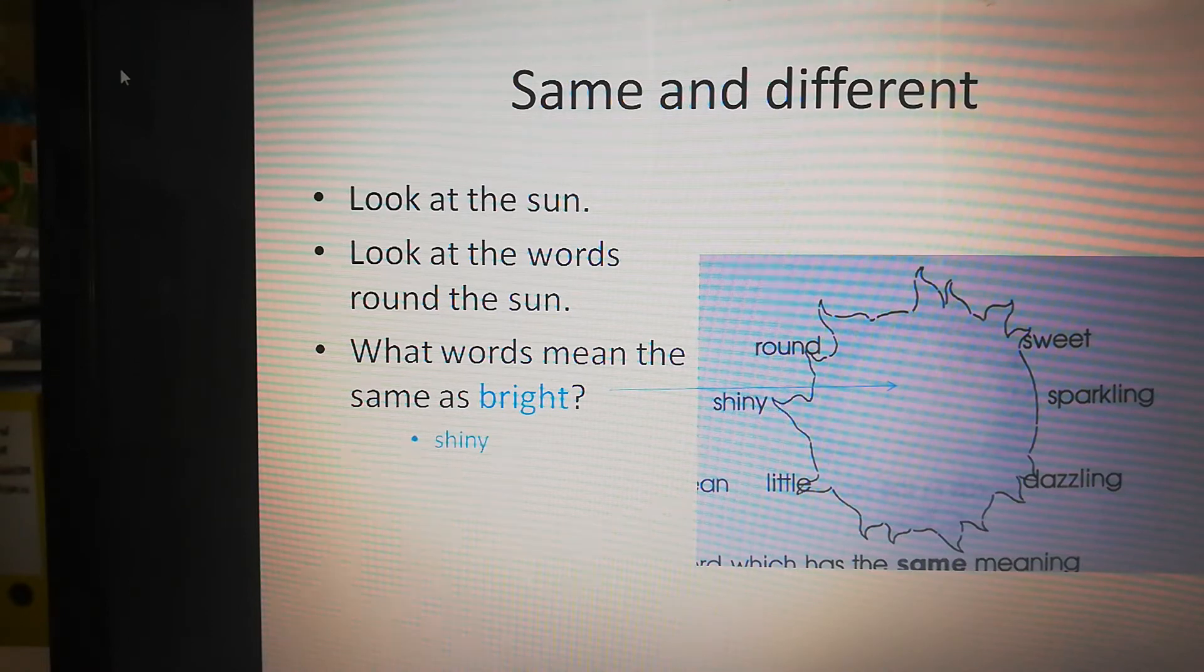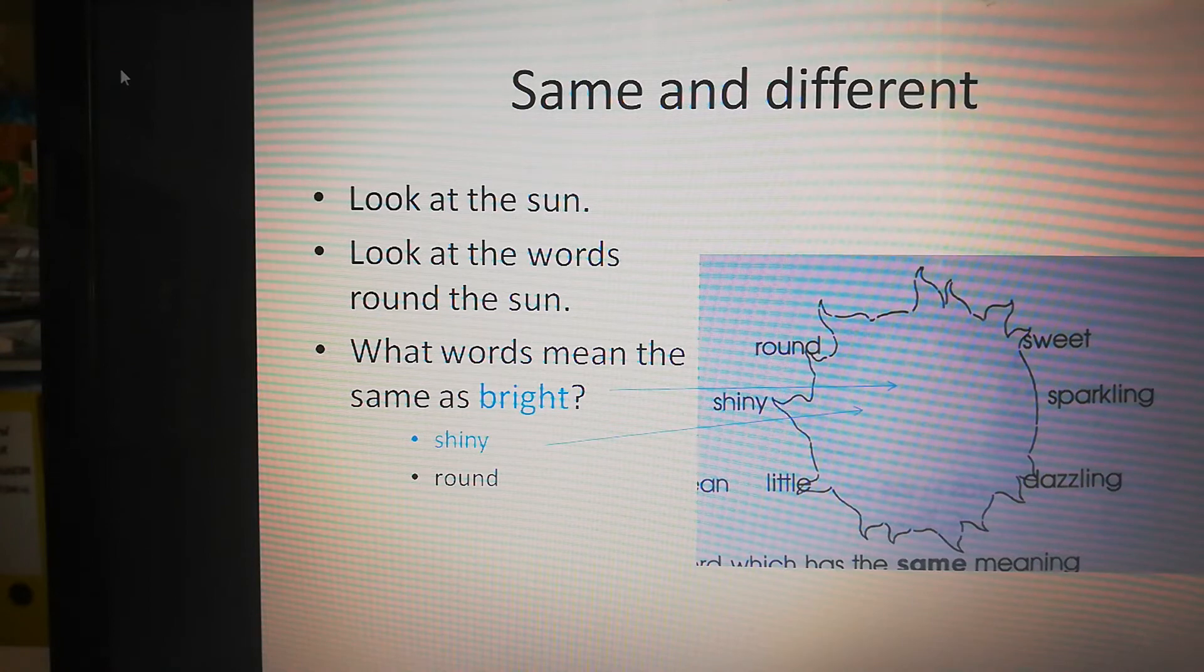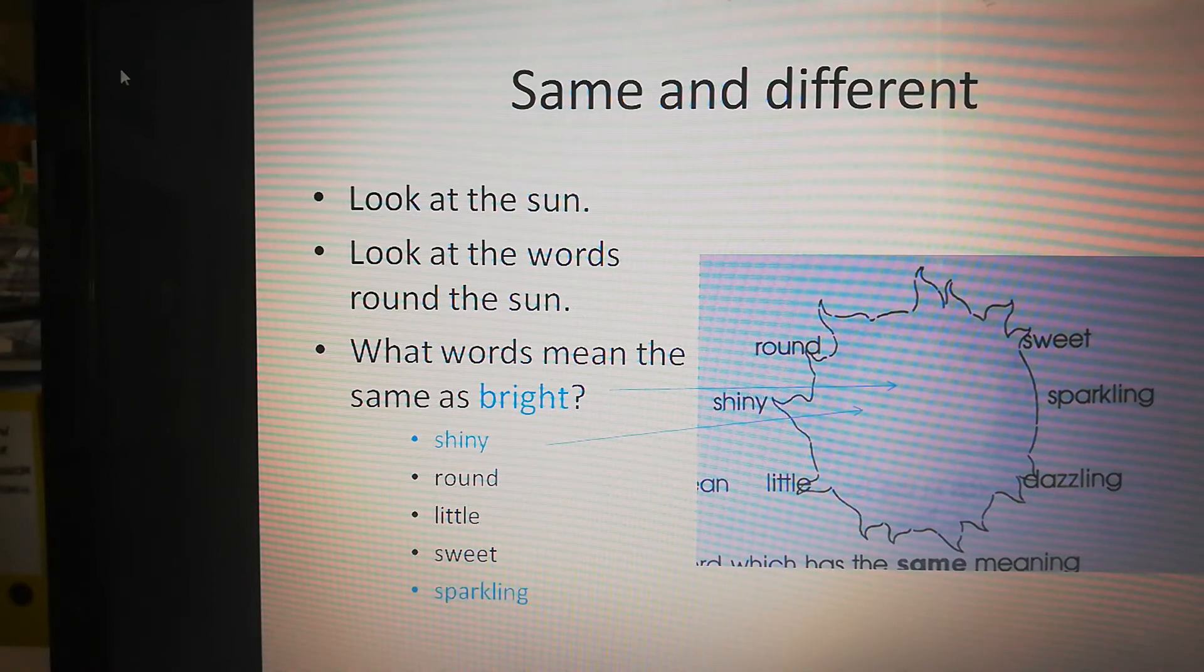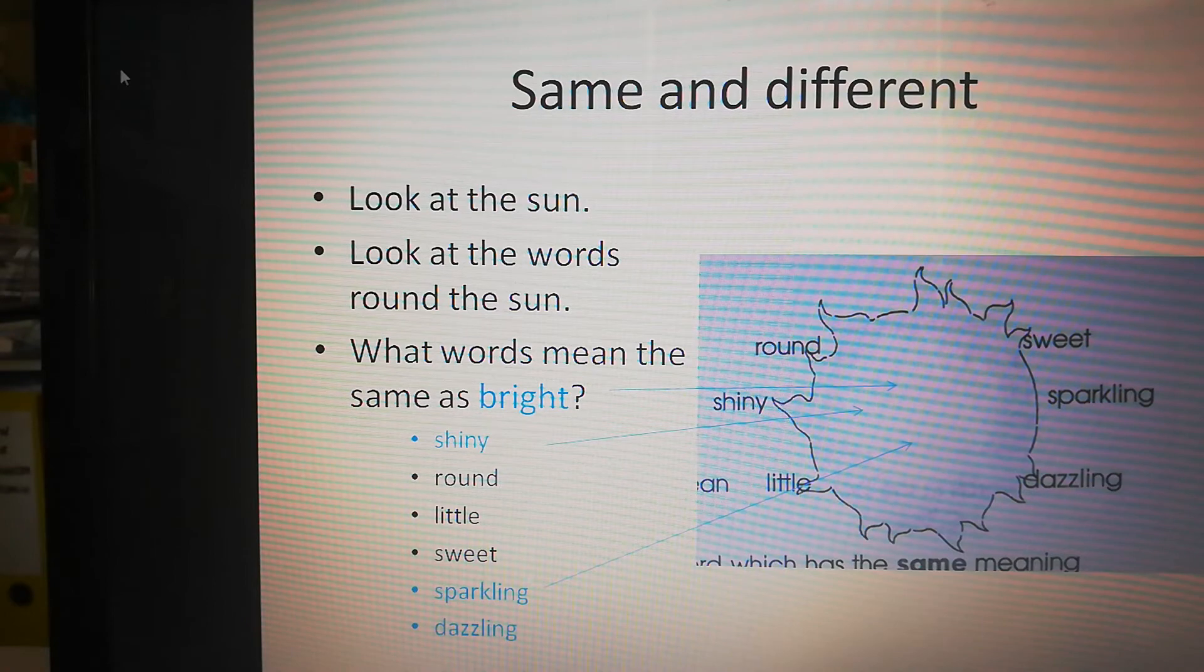Shiny. Yeah, write it in the sun. Round. No, that's not the same as bright. Little. No, it's not the same as bright. Sweet. That's like candies. No, it's not the same as bright. Sparkling. Yeah, that's the same as bright. And dazzling. Dazzling is the same as bright.